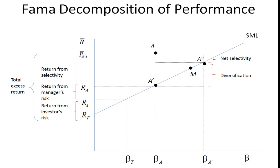This difference between the expected return of A and the expected return of A prime, which is on the security market line, is actually Jensen's alpha. Rather than just look at that, what Fama does is he decomposes this.